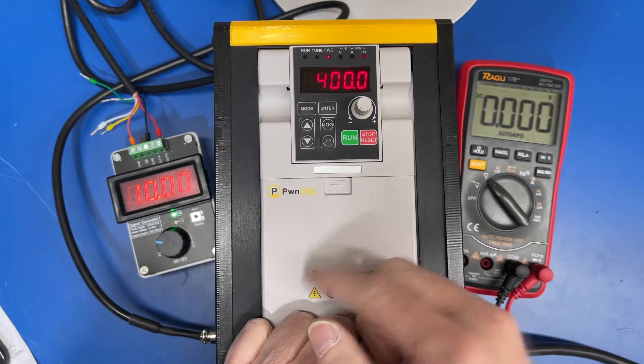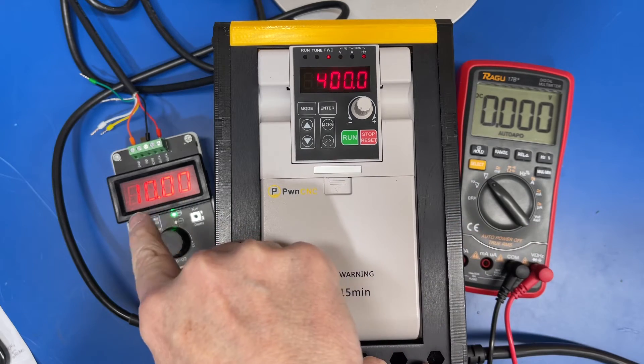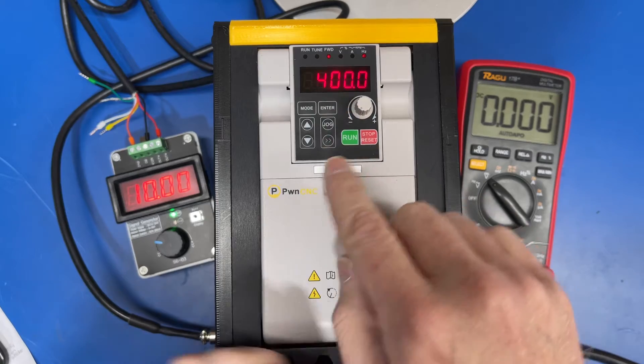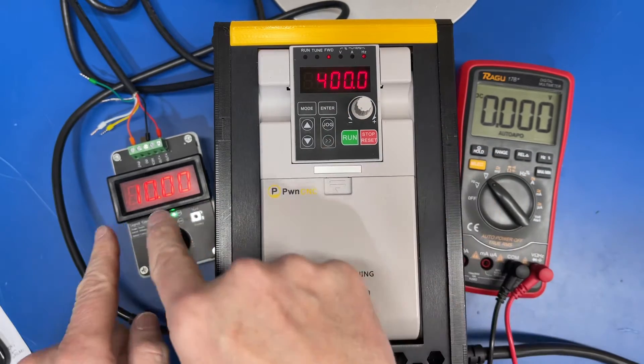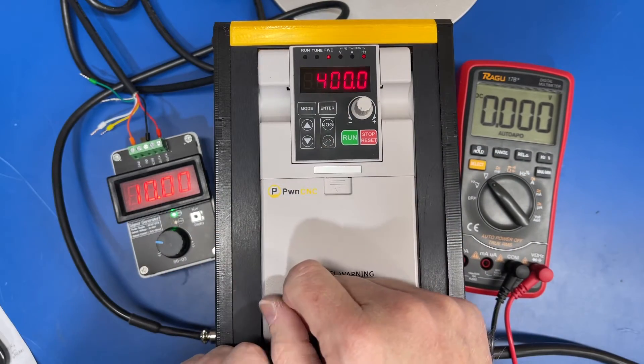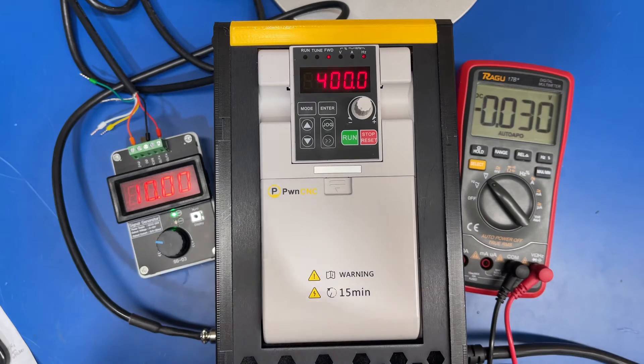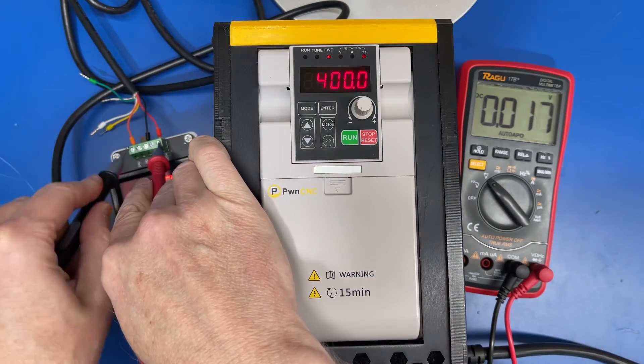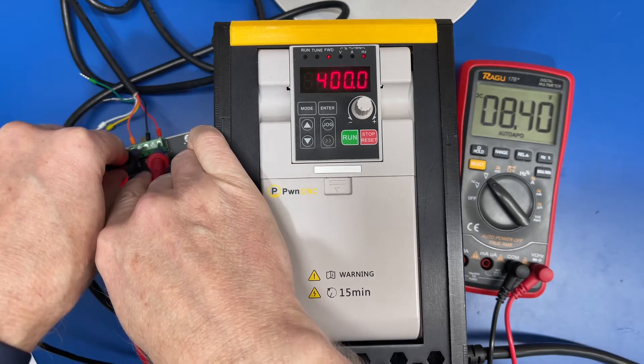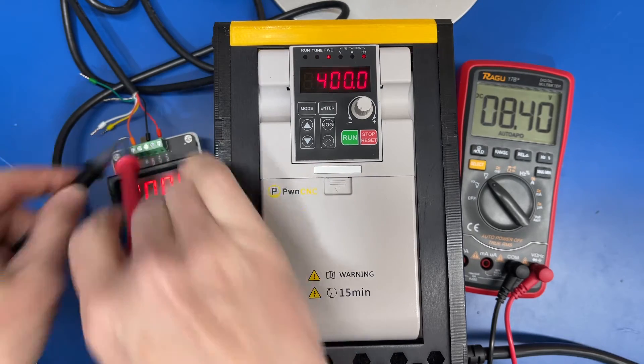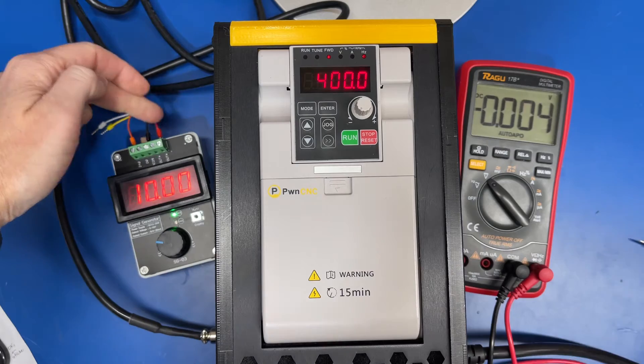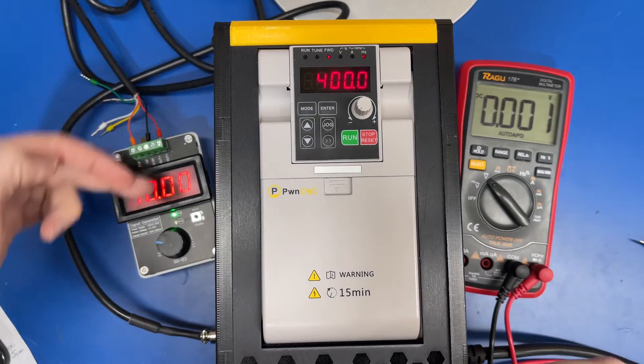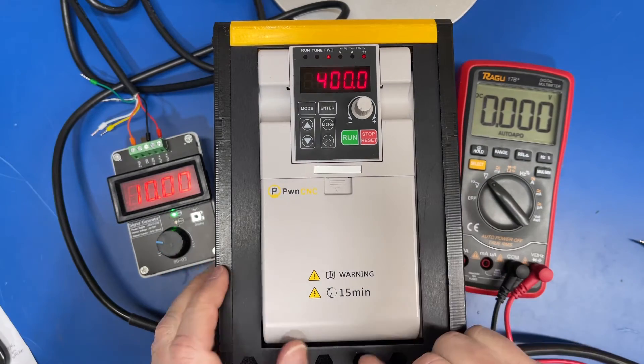You'll notice that now we've got 10 volts on the signal here. We've got 400 volts. So the VFD is reading that PWM line going, hey, I should be going to maximum speed. And if you measure it, we still get, if I measure it correctly, there we go, 8.4 volts. So it is sending the maximum that it can across this line into the VFD, and that's what the VFD is reading.